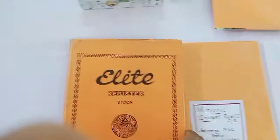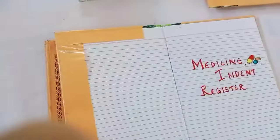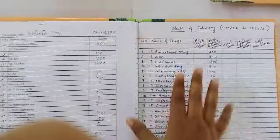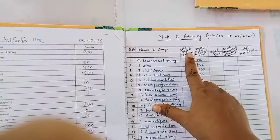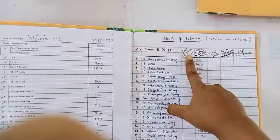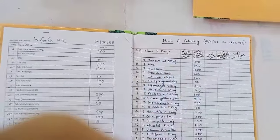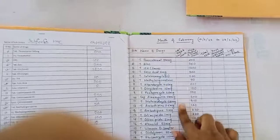I rather chose to write my own one. So in my register, I have: serial number, name of the drugs — I have written all the drugs — then left stock of last month, meaning what tablets are saved from last month and the quantity I write here.